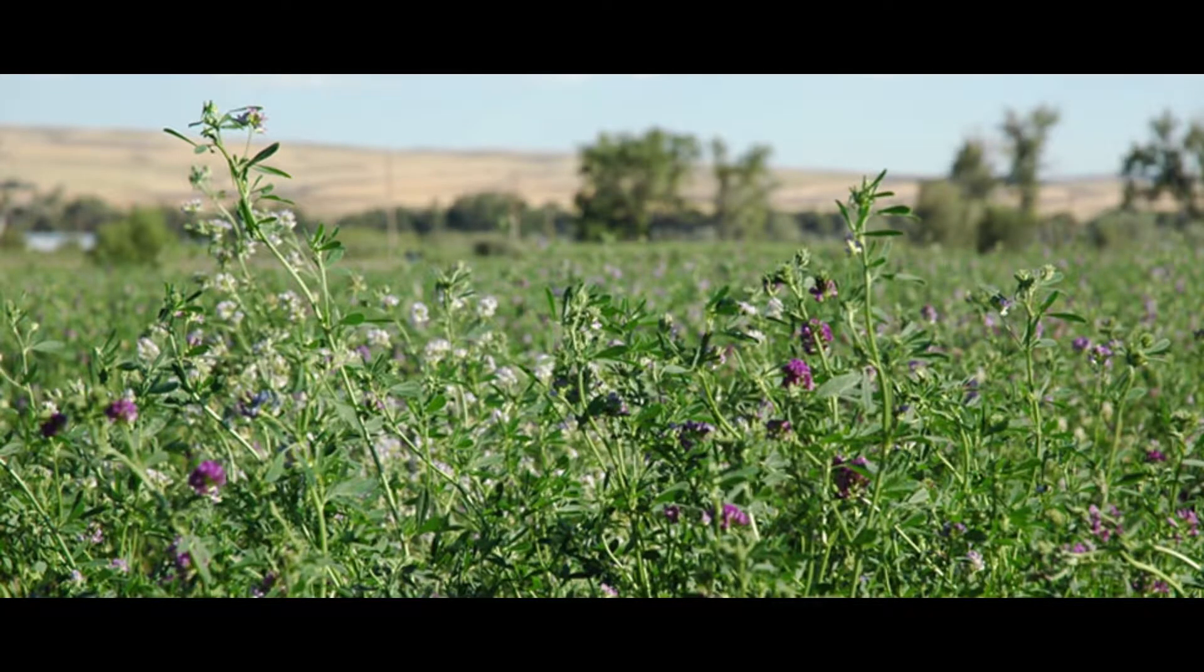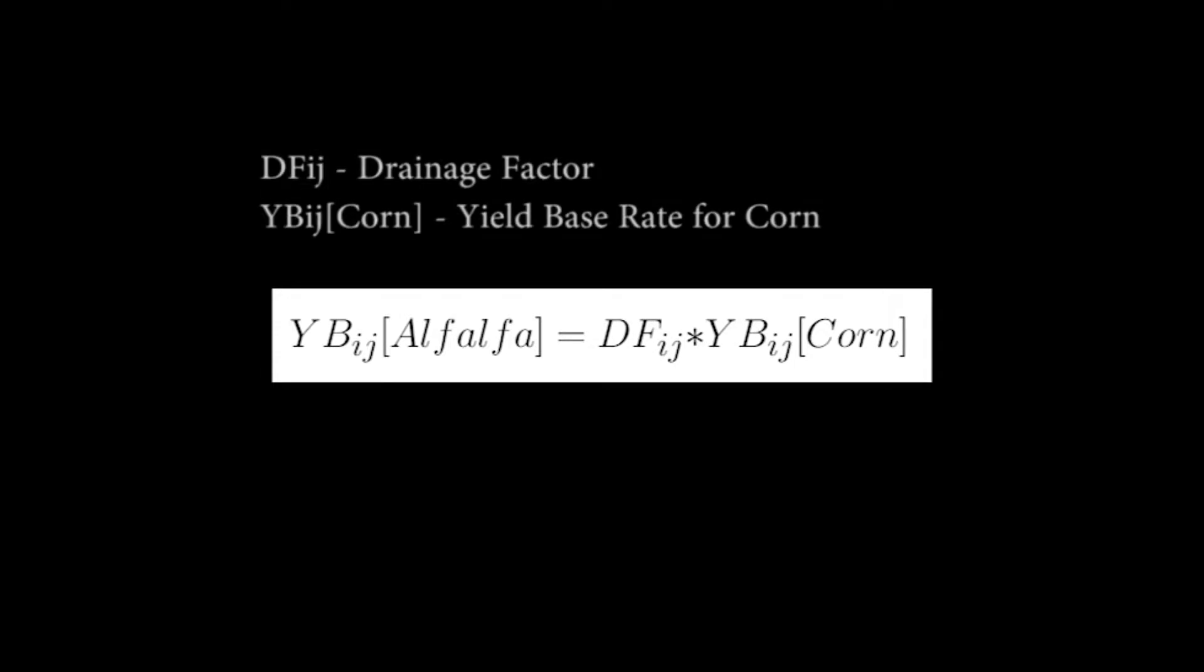Alfalfa hay yield is based on the ISPAID equation: YB_ij[Alfalfa] = DF_ij × YB_ij[Corn]